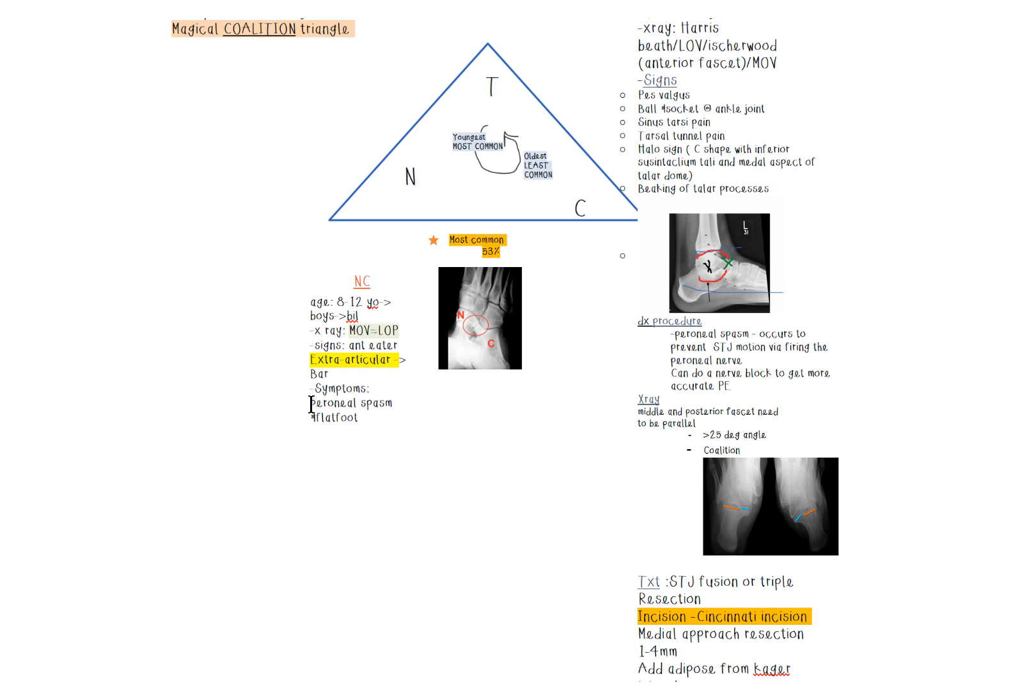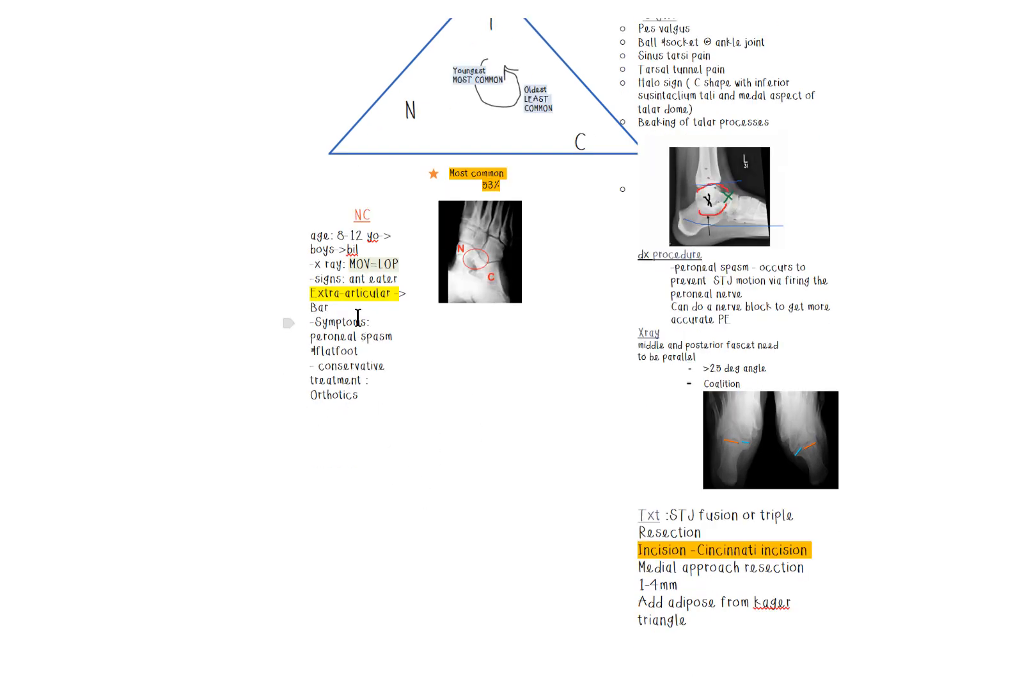The symptoms for this one is also peroneal spasms and kind of like that flat foot component to it, like all the other ones have. Always consider conservative treatment as an option, obviously before going into surgery. You can offer some orthotics, you can modify those orthotics because definitely they'll have some sort of flat foot component. If that just fails, then consider surgery.